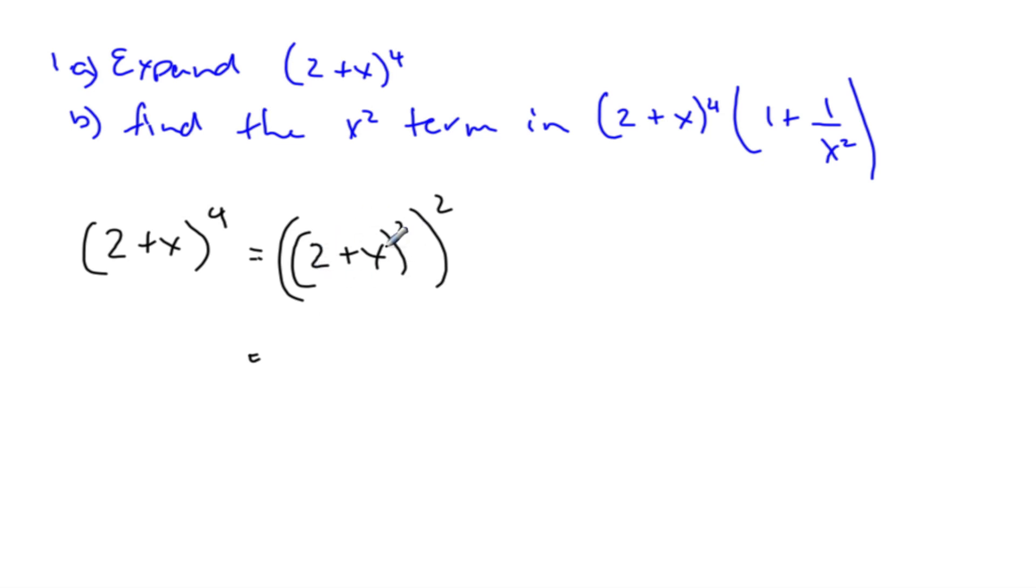Well, (2+x)^2 is simply 4 + 4x + x^2, squared. And now it's just a matter of expanding it out.